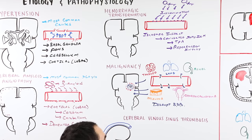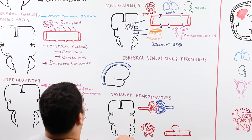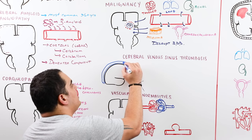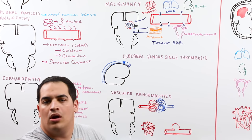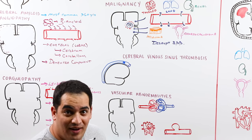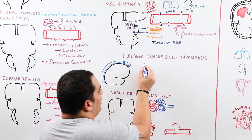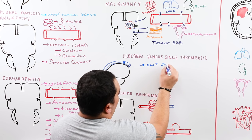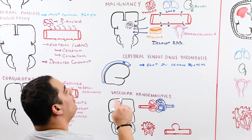Cerebral venous sinus thrombosis (CVST) is essentially a DVT of the brain. Different venous sinuses — superior sagittal, inferior sagittal, transverse, sigmoid, and straight sinuses — can develop a venous clot, which can lead to a bleed.